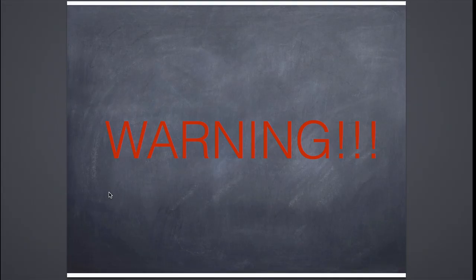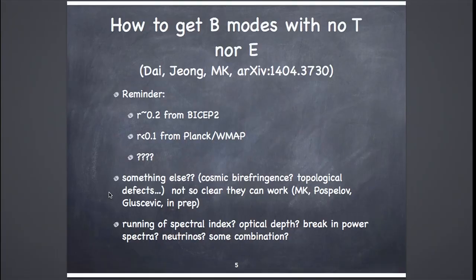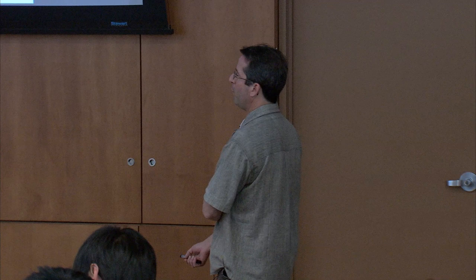I'm going to start with a warning: any inferences based upon digitization of these slides is completely pointless. The first thing is this paper with Liang Dai and Donghui Jiang, reported on arXiv back in April. It's a mechanism whereby one could get B modes from tensor fluctuations without any E modes or temperature fluctuations whatsoever.